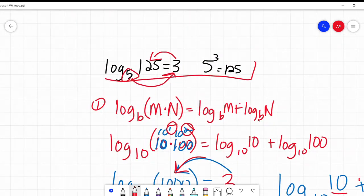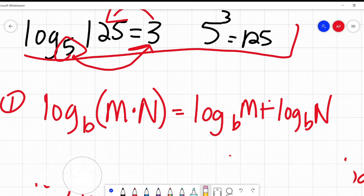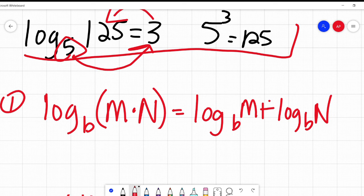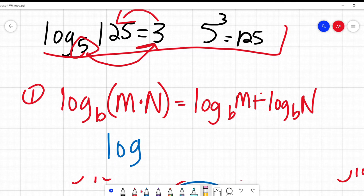That's our rule. Log base B of M times N, log base B of M plus log base B of N. Because just like here, I just feel the need to reiterate this. I'm sorry if I'm just belaboring the point, but I really want to make sure everyone's understanding why this is true.